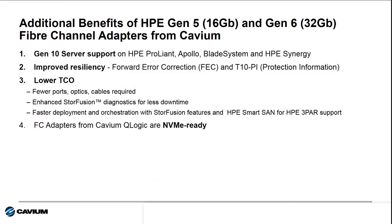Besides the increase in IOPs and bandwidth compared to 8GB fiber channel, Gen5 and Gen6 technology provides other benefits as well. First, both Gen5 and Gen6 adapters are supported in HPE's newest Gen10 server platforms. Second, both feature forward error correction and T10 protection information capabilities that provide improved resiliency of the SAN, enabling the infrastructure to handle certain error conditions. Third, customers will benefit from lower total cost of ownership due to fewer connections, cables, and transceivers required. Additionally, HPE adapters from Cavium QLogic support enhanced diagnostics and orchestration capabilities like diagnostics ports, fabric-assigned worldwide name, and fabric-based boot — part of what we call StoreFusion technology when connected to Brocade Gen5 or Gen6 fiber channel switches. These adapters also support HPE Smart SAN for HPE 3PAR, which can greatly simplify SAN deployment and reduce TCO even further.